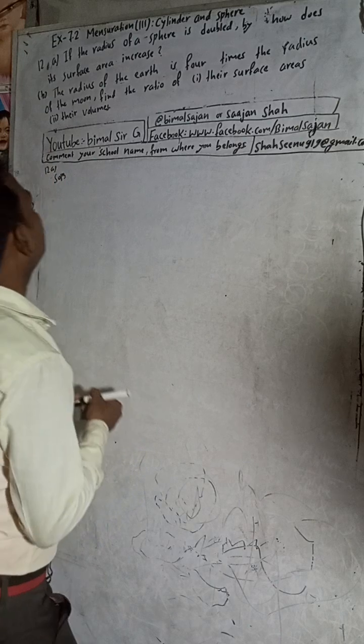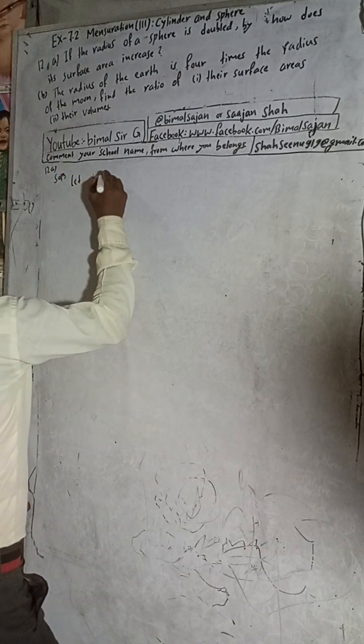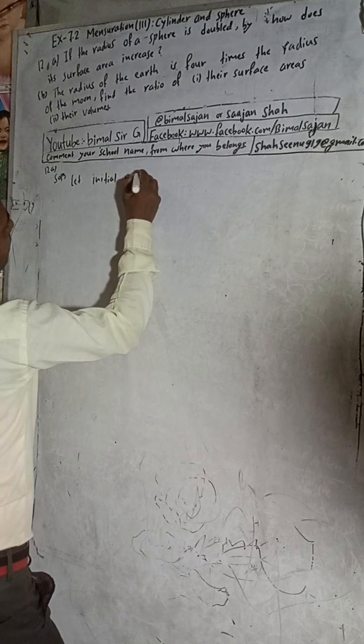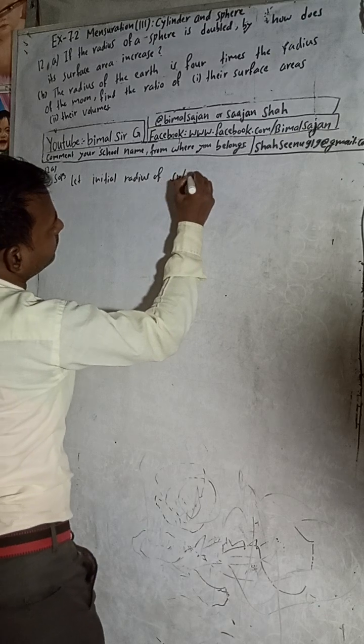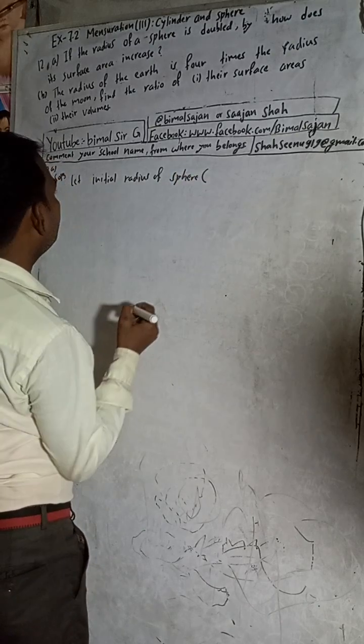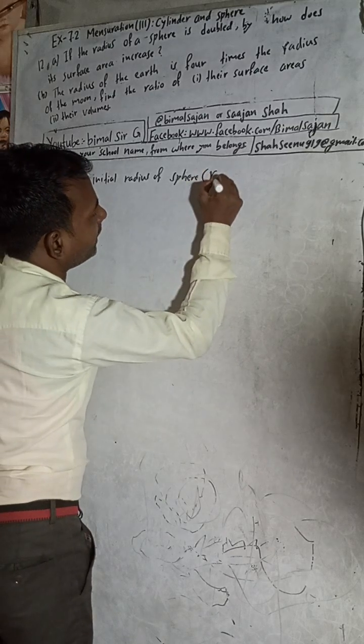Now I will start this solution. The question is: if the radius of a sphere is doubled, by how much does its surface area increase? Let the initial radius of the sphere be R.